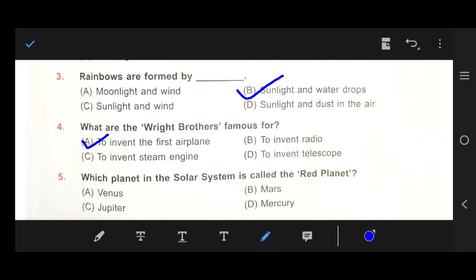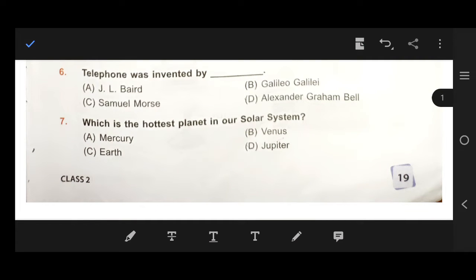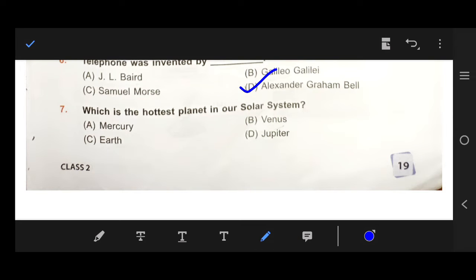Next, number 5, which planet in the solar system is called the red planet? Our right answer is B, Mars. Next, number 6, telephone was invented by, right answer is D, Alexander Graham Bell. Next, number 7, which is the hottest planet in our solar system? Our right answer is B, Venus.